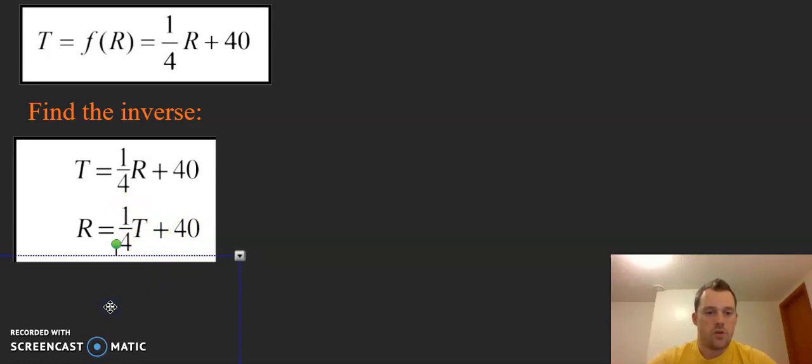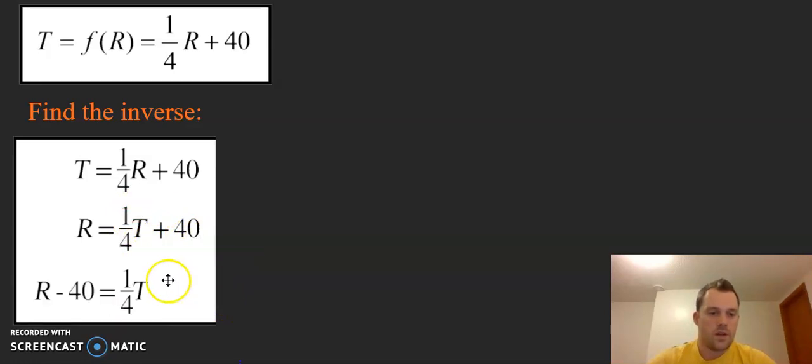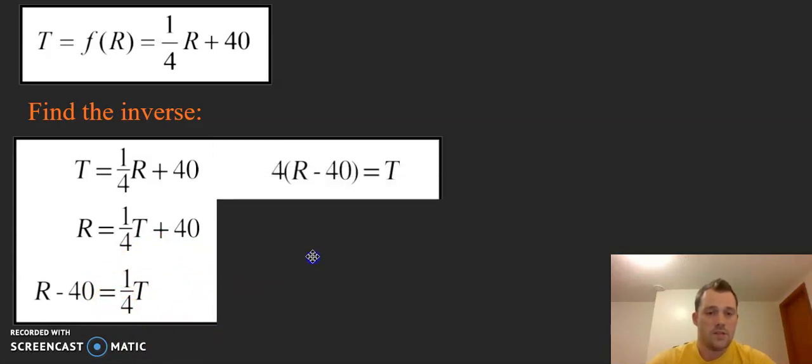Then we are going to subtract 40, and now we just have one last piece to get T by itself. We're going to multiply by 4 on both sides.